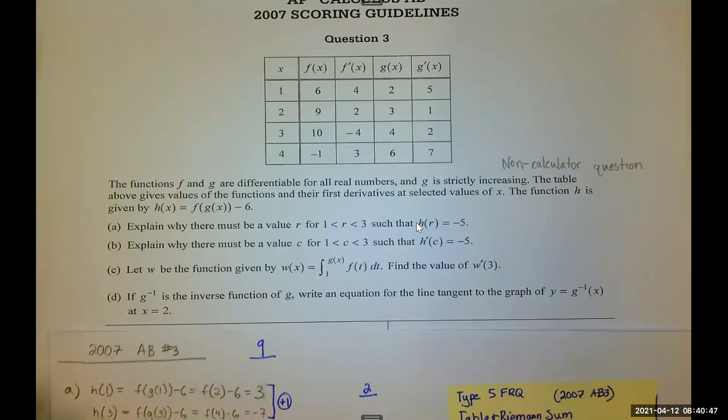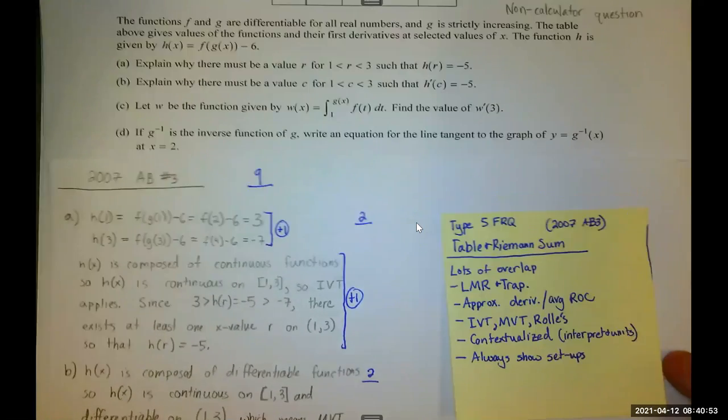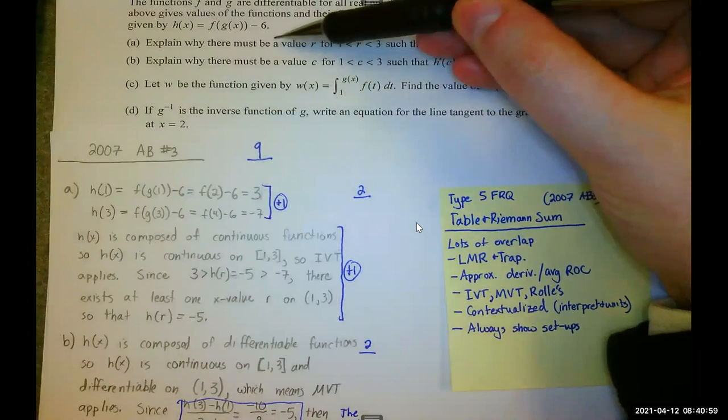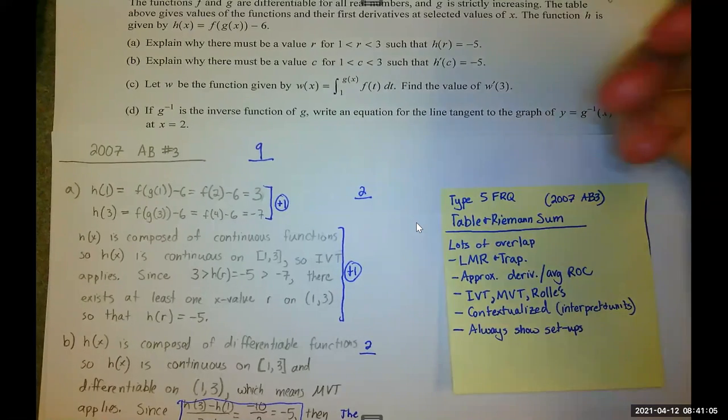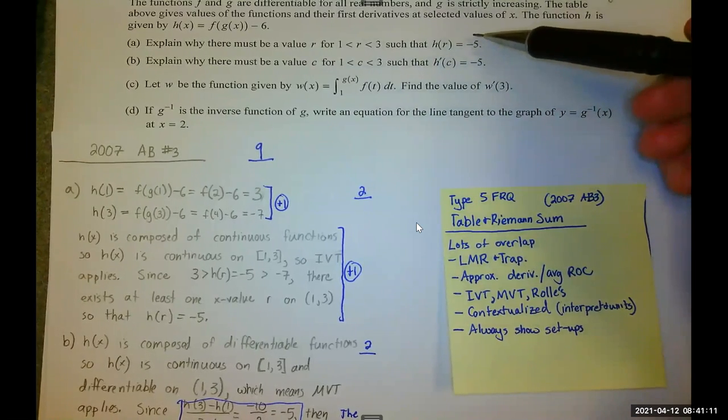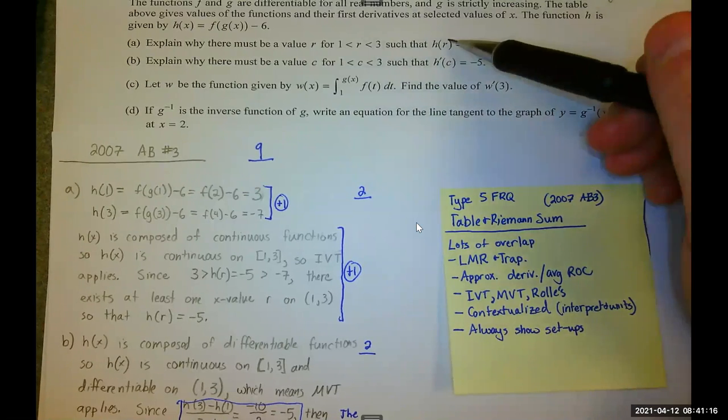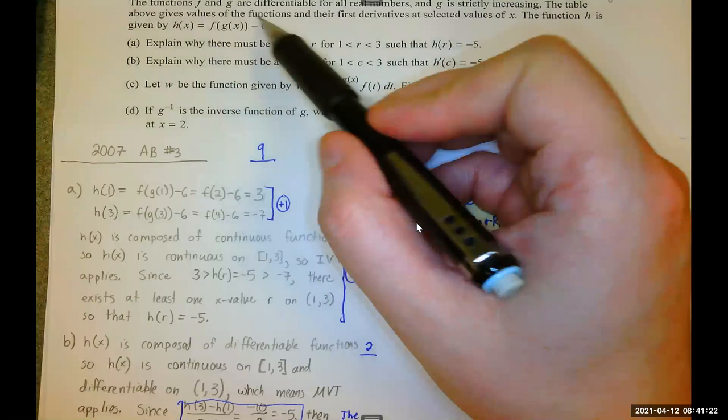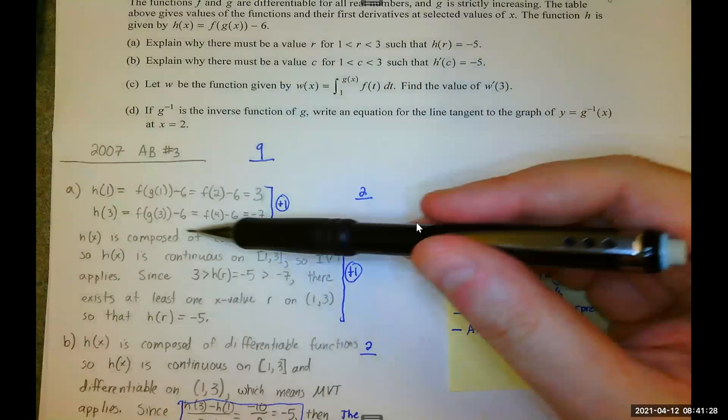So, continuing with my work, I have to explain why there must be a value R on the interval 1, 3, such that H of R equals negative 5. Now, it doesn't always mean there must be a value, use a theorem. But often, that's a good indicator. So, I looked at this, and it's H of R equals negative 5, and I thought about the intermediate value theorem. I thought about the derivative, if I could do that. So, I would need, for H of X, I would need an integral here that's going to be impossible. So it's got to be the intermediate value theorem.